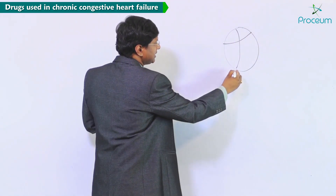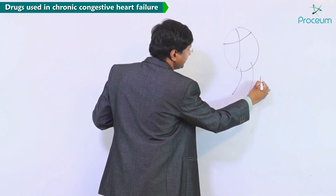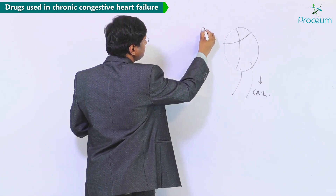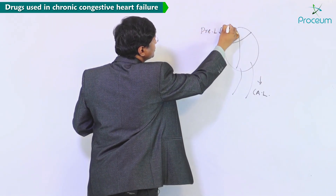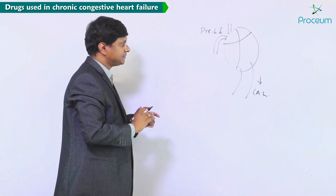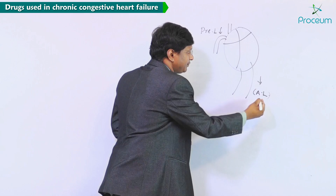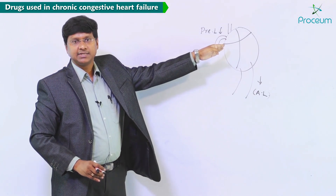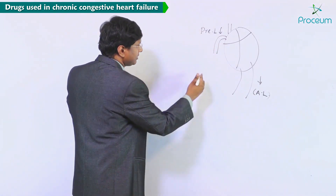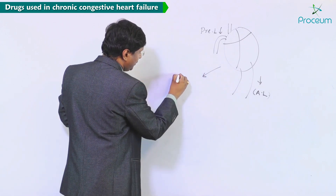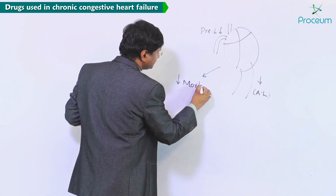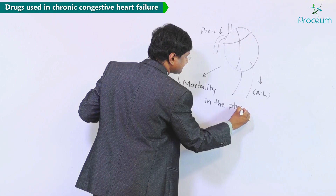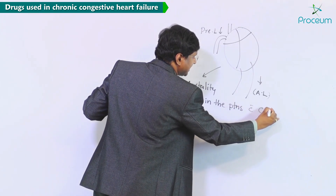We want the afterload to be reduced and we want the preload to be reduced. By reducing the afterload or the preload on the heart, we can decrease mortality in patients with congestive heart failure.